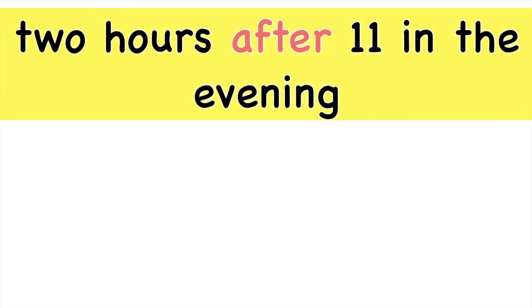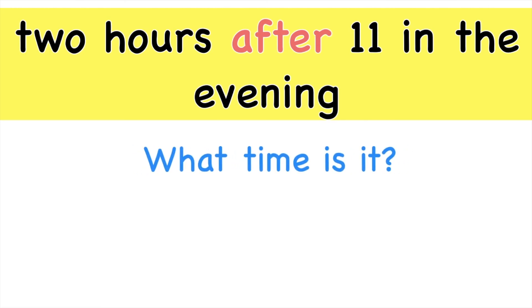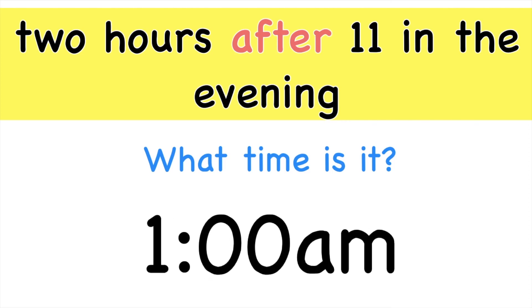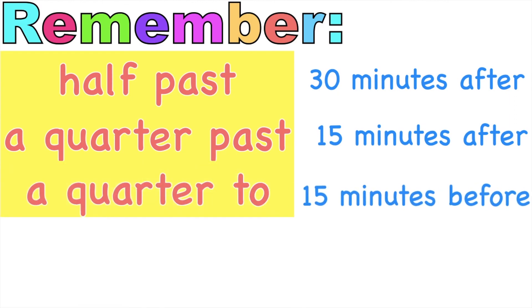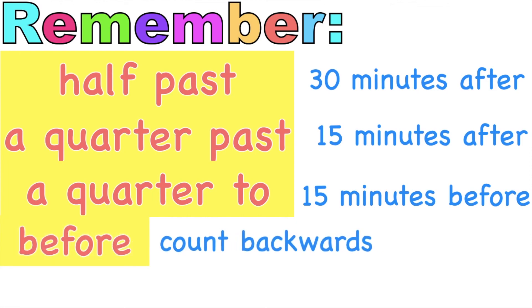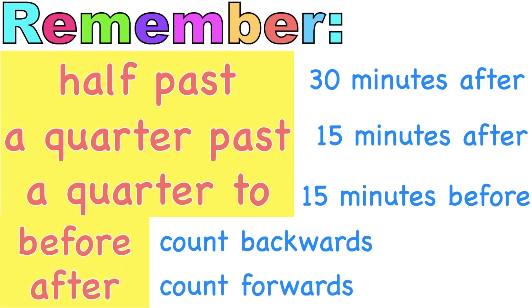How about this one? 2 hours after 11 in the evening. What time is it? Good job! It's 1 o'clock a.m. Always remember, children: half past is 30 minutes after; quarter past is 15 minutes after; quarter to is 15 minutes before. When you see the word before, you're going to count backwards. When you see the word after, you're going to count forwards. Is that clear?